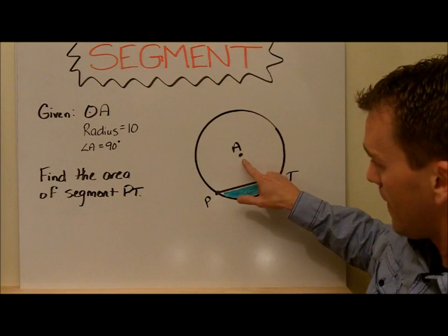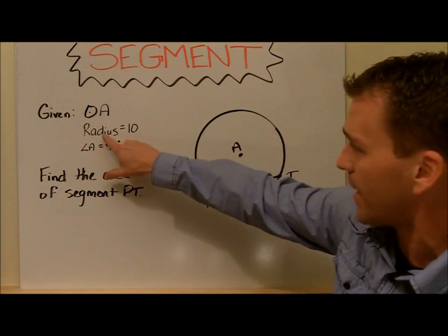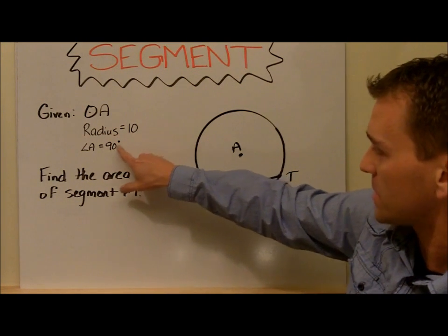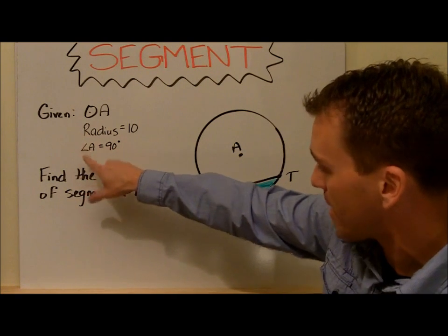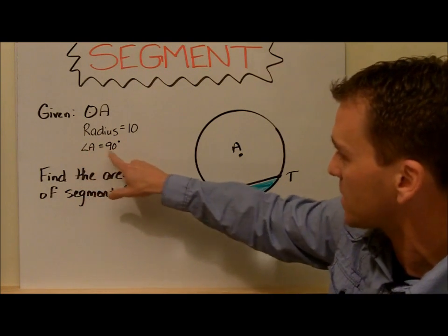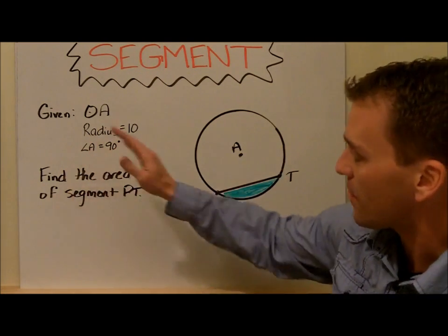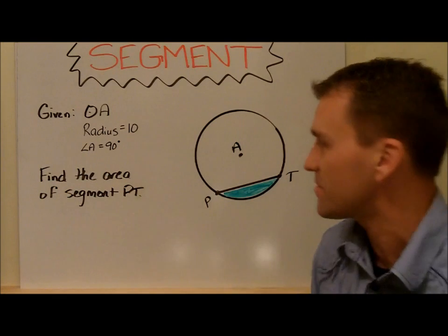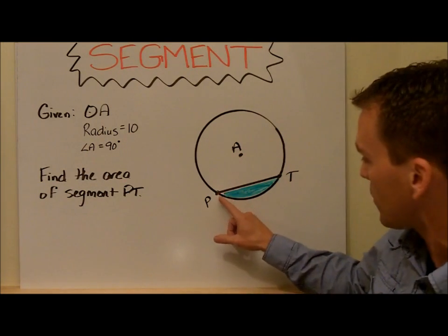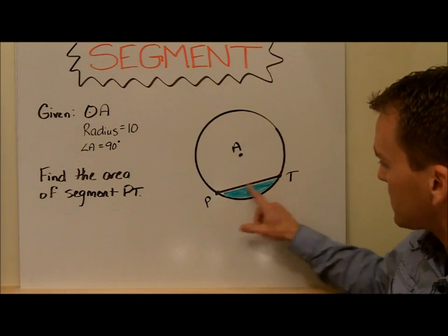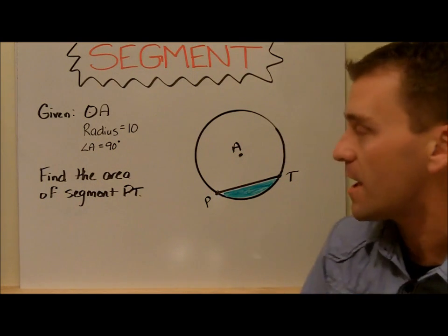Here's an example. You have circle A, the radius is 10, and the angle measure for A is going to be 90 degrees. The question is to find the area of segment PT — this piece right here — and we're going to try to find the area of it.